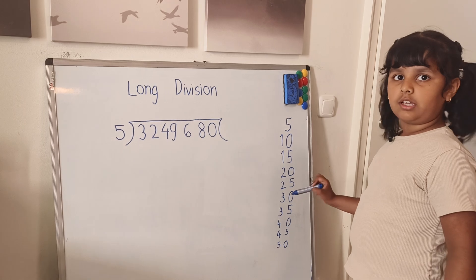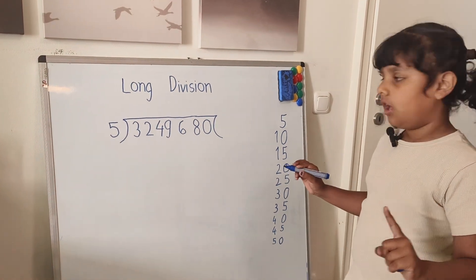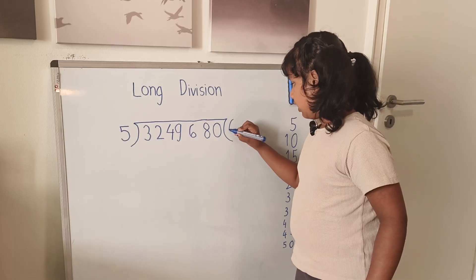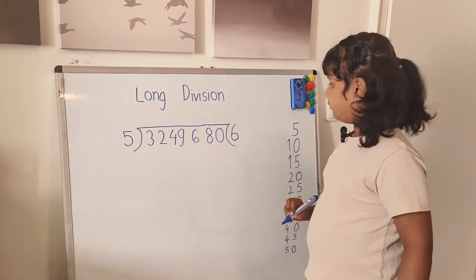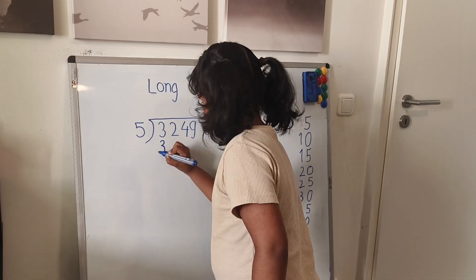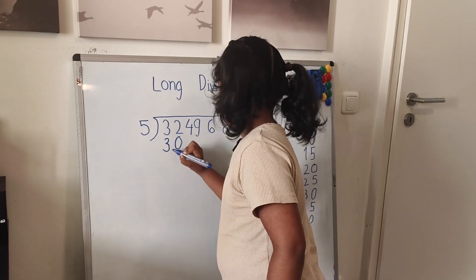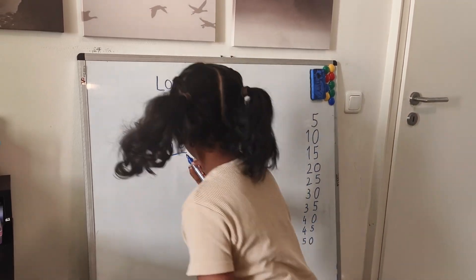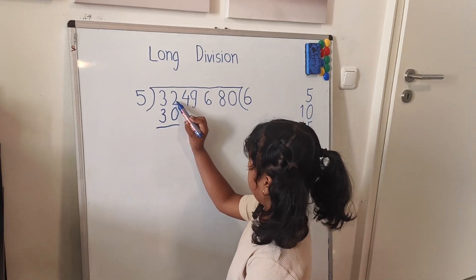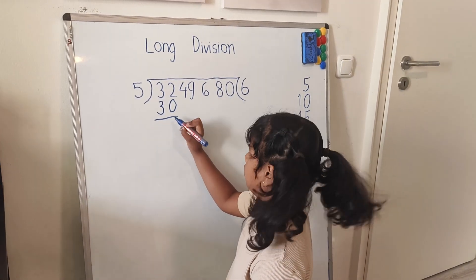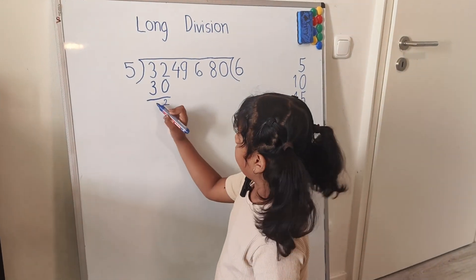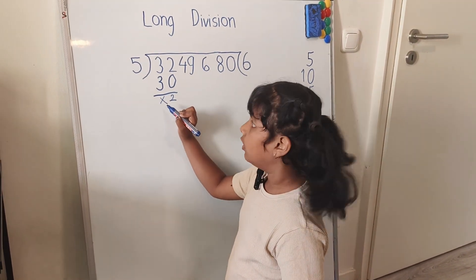So I will take 30. Five times 6 is 30, so I will add here 6, and I will add here 30. Then 2 minus 3 — there is a 2, and 3 minus 3 is nothing, so I will do a cross.